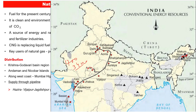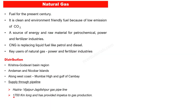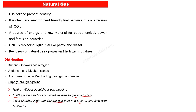The Hazira-Vijaypur-Jagdishpur pipeline has been extended to Rajasthan, Haryana, and Delhi. Along this route, there are 6 fertilizer plants and 3 thermal power plants. This is an efficient and economical mechanism for gas supply, providing 24-hour gas supply. The pipeline is about 1700 km, extended to about 3000 km total. It connects Mumbai High and Gujarat gas fields to North India.